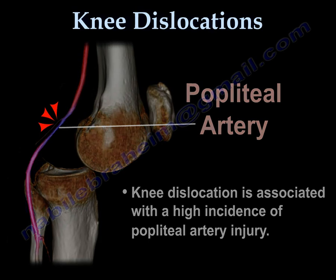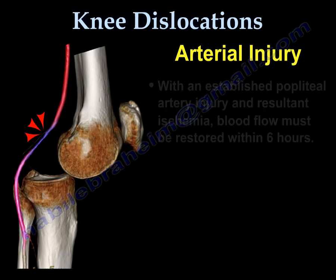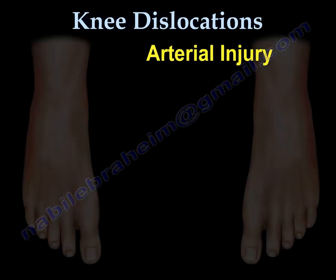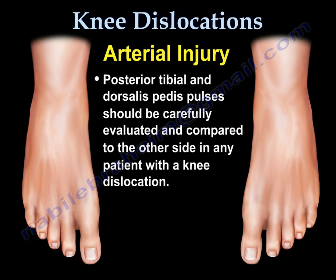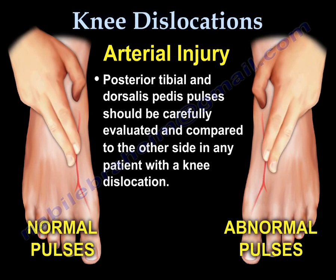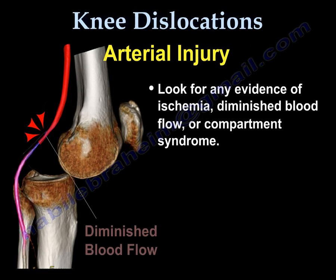With an established popliteal artery injury and resultant ischemia, blood flow must be restored within 6 hours. Posterior tibial and dorsalis pedis pulses should be carefully evaluated and compared to the other side in any patient with a knee dislocation. Look for any evidence of ischemia, diminished blood flow, or compartment syndrome.